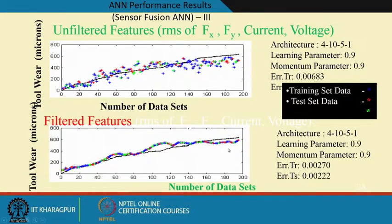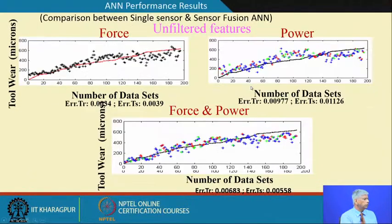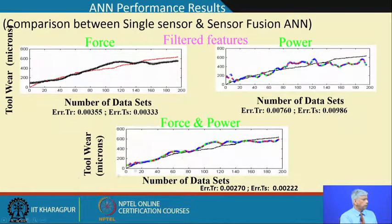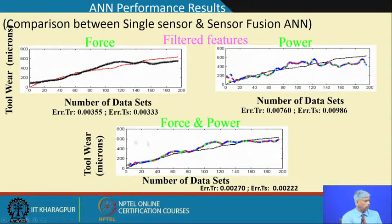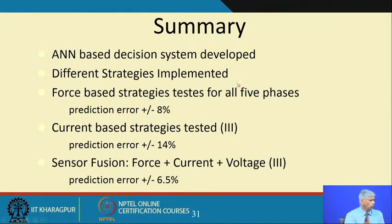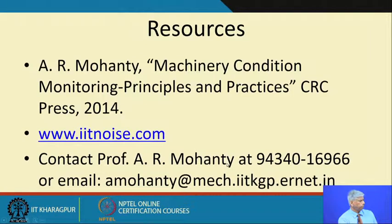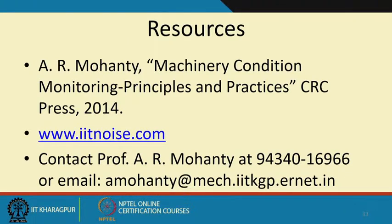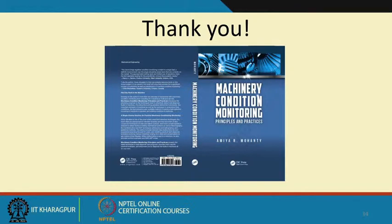We could predict the tool wear using the data sets, with good predictions using force, power, and so on. Once I measure the force and power from the machine, I can say that is the tool wear, and at 600 microns you need to replace the tool. In summary, we developed an ANN-based system where the prediction error improved when we had sensor fusion — combining force, current, voltage, and so on. More of this can be found in my website and in my book. Thank you.